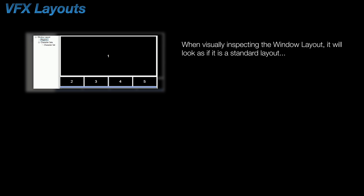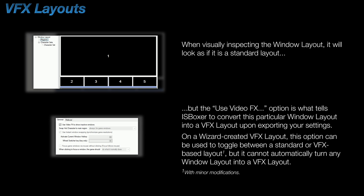I'll also point out that if you look at the newly created window layout, it will look just like a standard layout, but the magic lies in the option found under the layout's general settings. The Use Video Effects to Show Active Windows option is what tells IS Boxer to convert this to a VFX layout upon export. However, this option can be used as a toggle with a minor adjustment to enable or disable the video effects portion of any wizard-generated VFX layout.